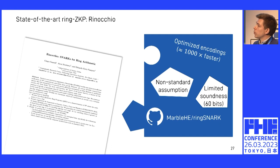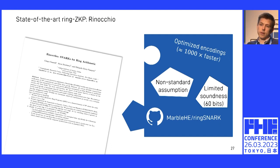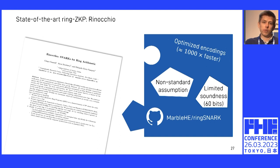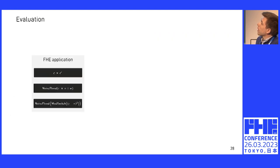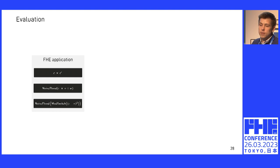So these are the primitives we looked at: trusted execution environments on one side, then standard field-based ZKP proofs, and then more modern ring-based ZKP proofs. To evaluate these in practice, we chose a few FHE applications and FHE circuits, and implemented those using the SEAL library as a backend.